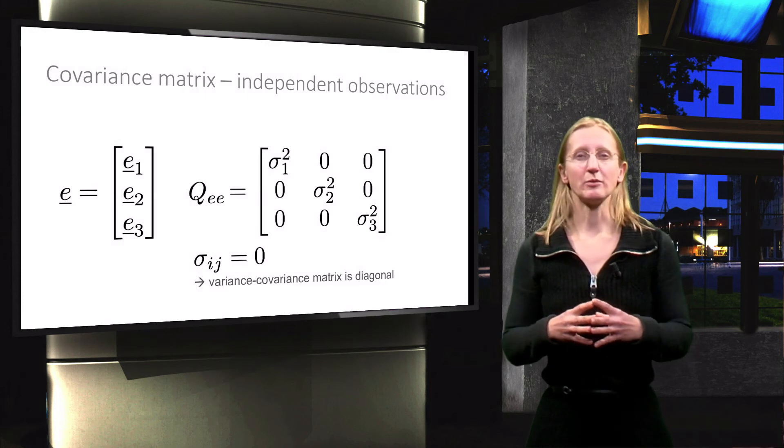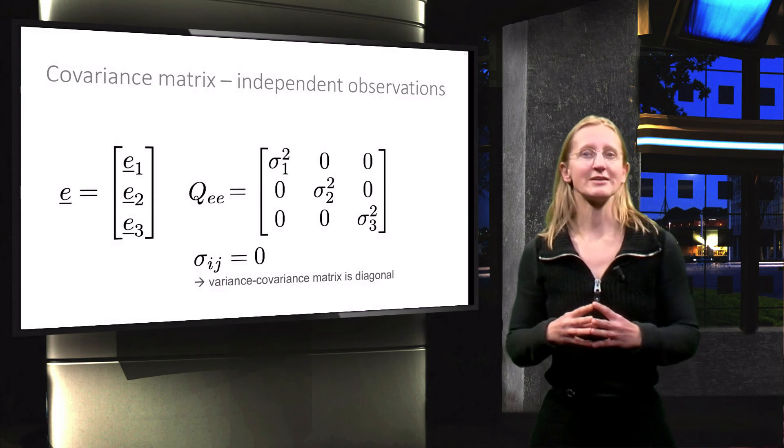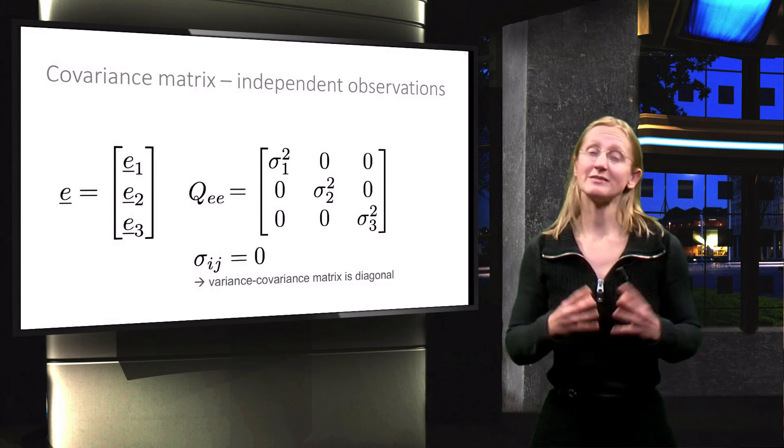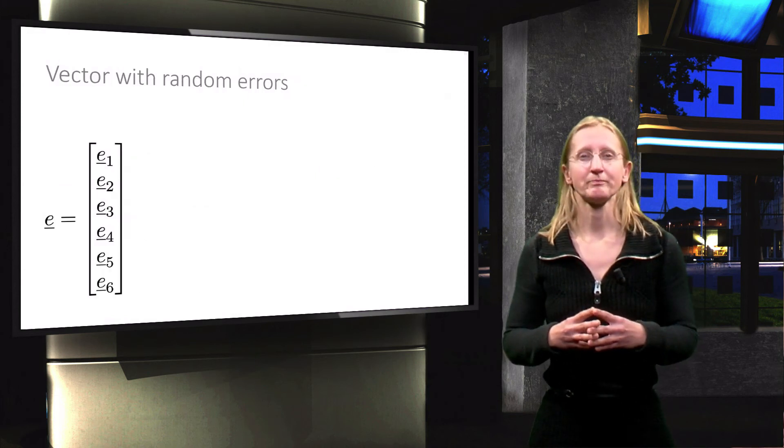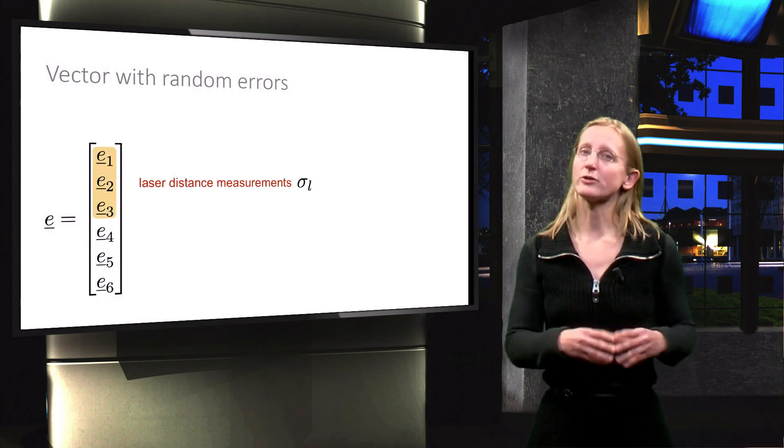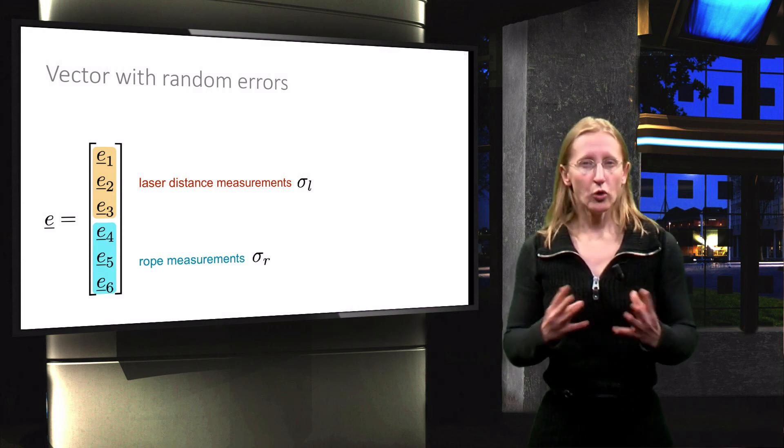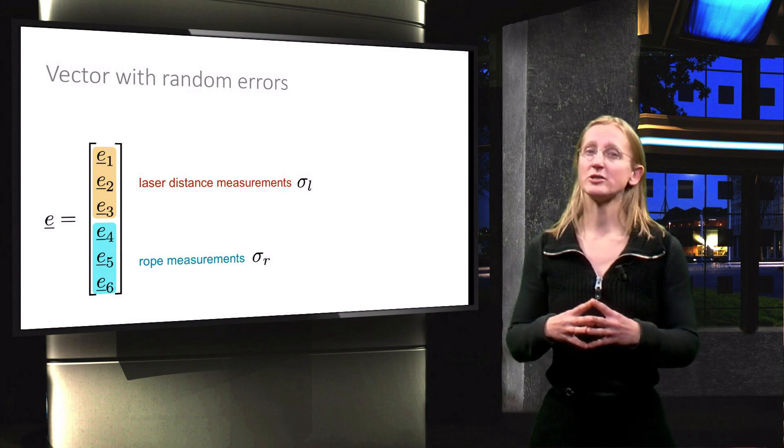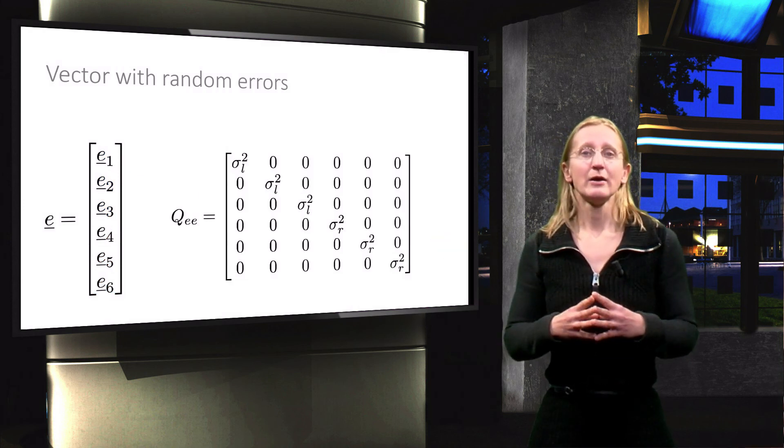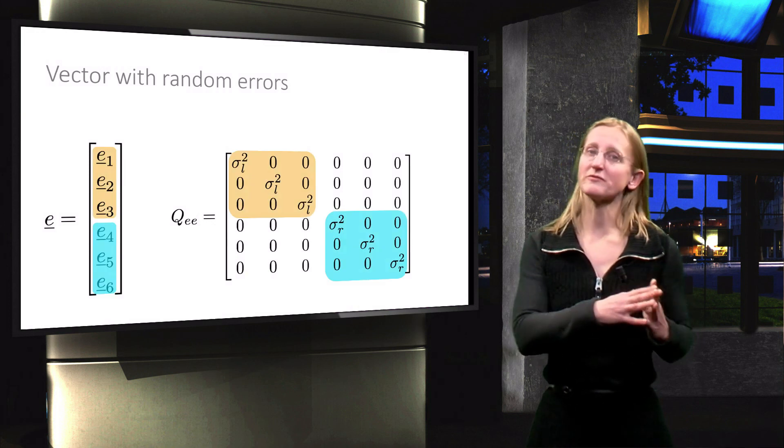We will now show an example. From the measurements, we know that measurements with different instruments have different precisions. Assume we collect six measurements with the associated random errors: three laser distance measurements with standard deviation sigma L and three rope measurements with standard deviation sigma R. All measurements are independent. The covariance matrix will now be equal to the 6x6 matrix shown here, where we can clearly identify the two sub-matrices linked to the two different types of measurements.